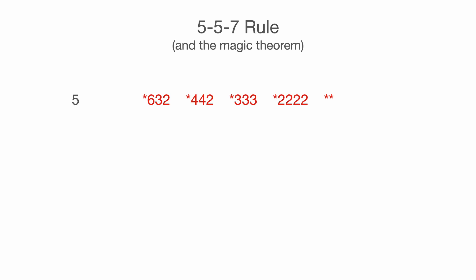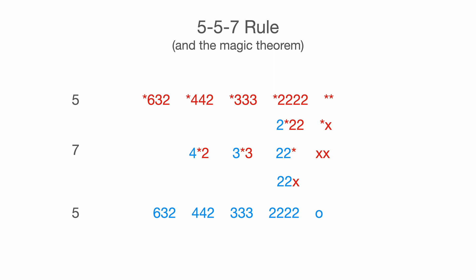Here's the 557 rule: there are only five red patterns. If you have a six, you must also have a three and a two; if you have a four, you must have another two; if you have a three, you must have a three; and so on. There are also five blue groups — the same as the red ones, so nothing new. 'Red star star' becomes 'o', meaning no symmetries. From the magic theorem, a double digit behind the star can be converted to a single digit in front: so 'star 442' becomes '4 star 2', 'star 333' becomes '3 star 3', and 'star 2222' converts twice to give '2 star 22', '2 2 star', and '22x'. These are all seven mixed groups.